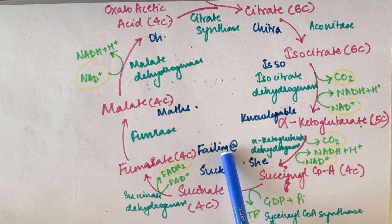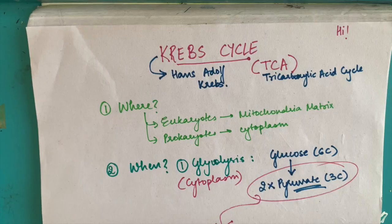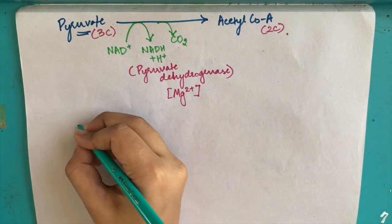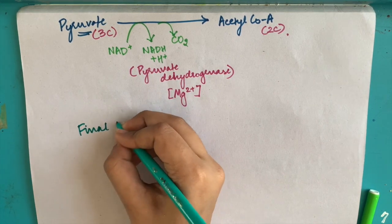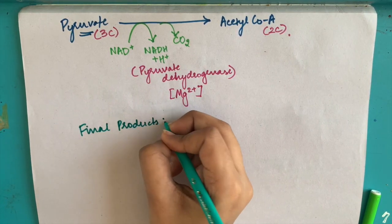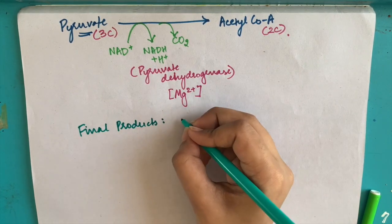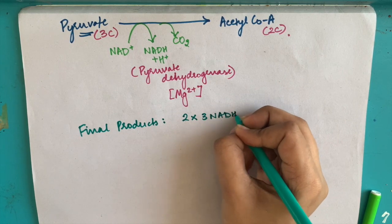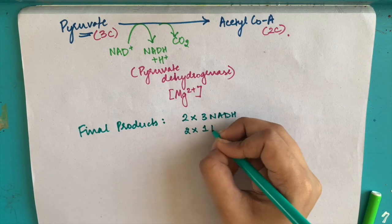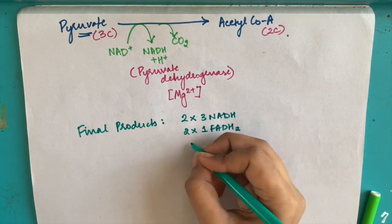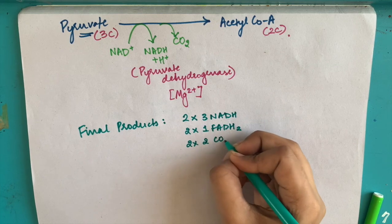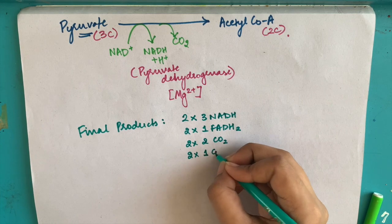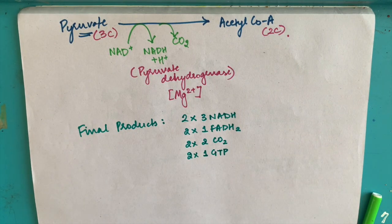You know that glycolysis leads to production of two pyruvate molecules, but in the TCA cycle we have only considered one molecule. Hence the final products are always two multiplied by the number of them produced. There is always 2×3 NADH produced, that is 6 NADH, and there is always 2×1 FADH2, 2×2 CO2, and 2×1 GTP being produced as the final products when we consider two pyruvate molecules undergoing oxidation.